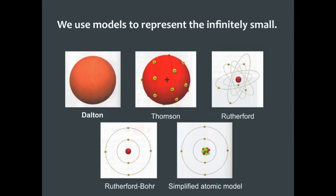We are going to go over the following models: Dalton's, Thompson's, Rutherford's, the Rutherford-Bohr model, and the simplified atomic model. So why do we use models? We use models to represent something that is so small that we cannot see it with the naked eye. It's a visual representation of a reality that we can't necessarily see.